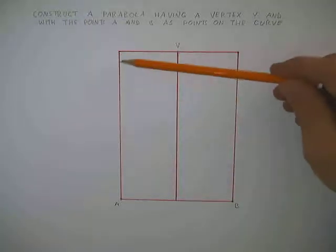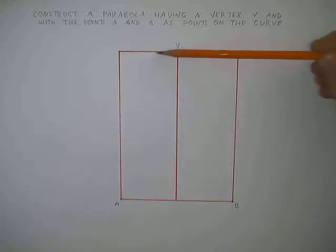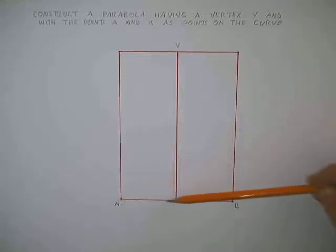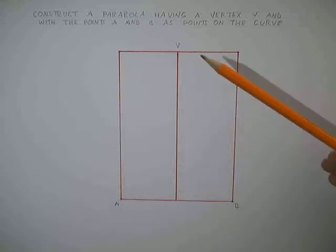So, to start off, I will work first of all with one side of the rectangle. This rectangle here on the left. And I am going to construct half of the parabola in that side first.